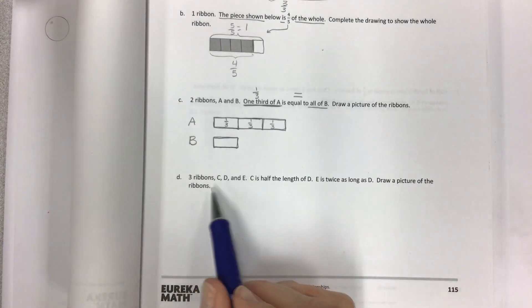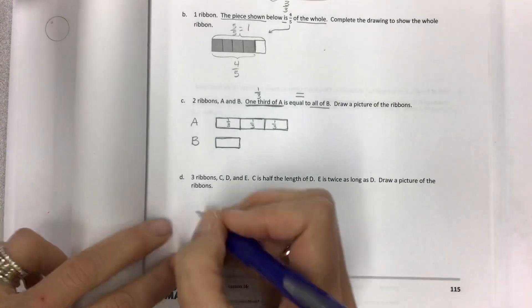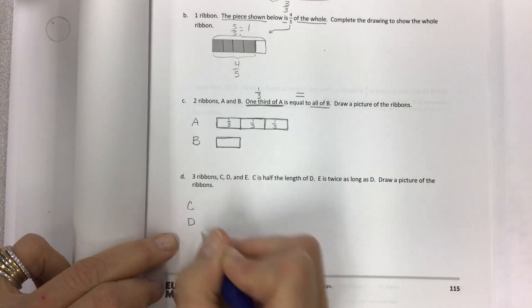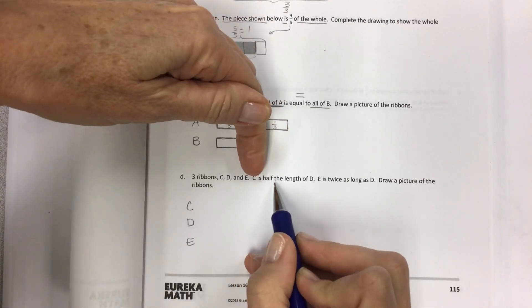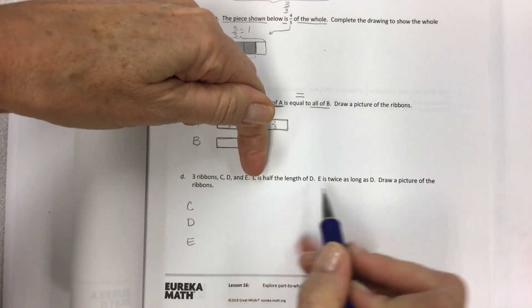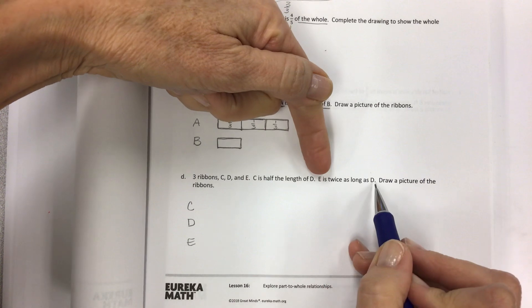But now we have three ribbons: C, D, and E. C is half the length of D. E is twice as long as D. So we have these comparative sizes, and all you have is that C is half and E is double or two times as much as D.